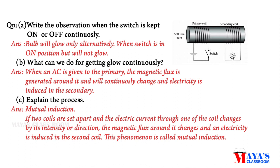Part B: What can we do for getting the bulb to glow continuously? If we use AC, the primary coil generates a magnetic flux change, which will induce electricity in the secondary coil. The secondary coil will generate electricity and the bulb will continue to glow.